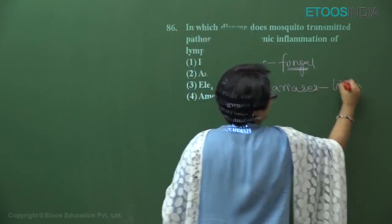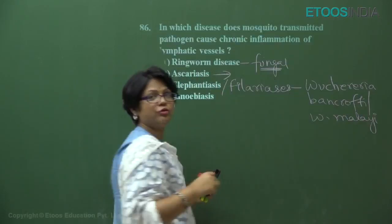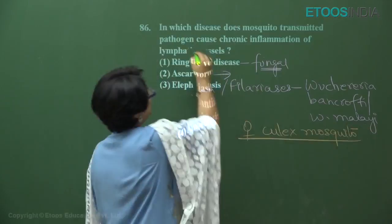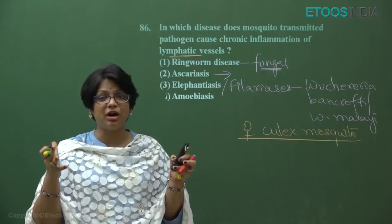Elephantiasis or filariasis is caused by a roundworm — Wuchereria bancrofti or sometimes Wuchereria malayi. These parasitic roundworms are transmitted by the bite of the female Culex mosquito. When they enter the human body, they affect the lymphatic vessels, cause inflammation, and lead to gross abnormality of the lower limbs and genital region — the legs and scrotum become swollen.